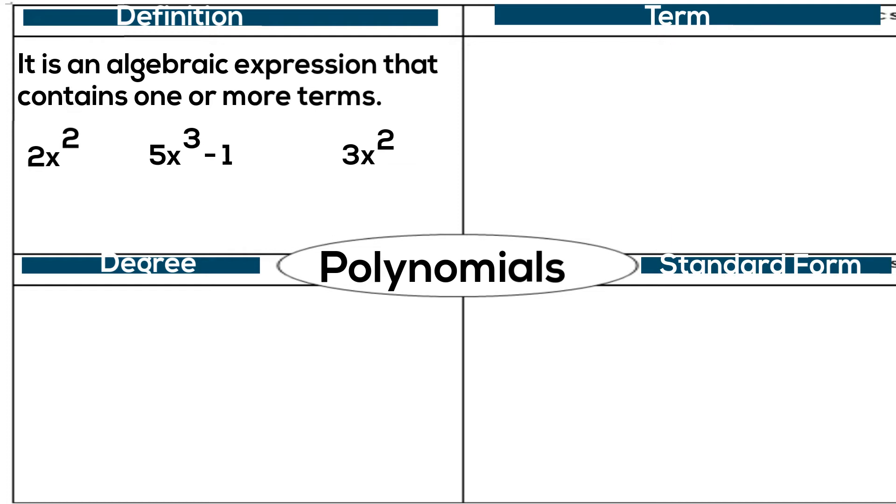Now let's classify polynomials by terms. We will look at one term first. If a polynomial has one term, it is called a monomial. Mono meaning 1. An example would be 2x squared, or 5, or 1 third x to the fifth. All of these are single terms. No adding or subtracting.